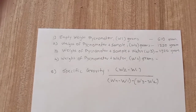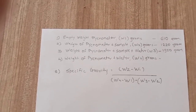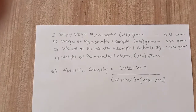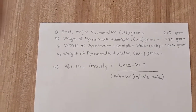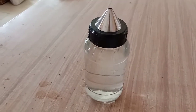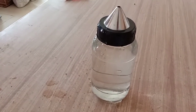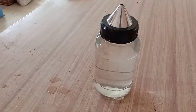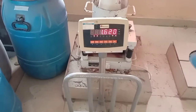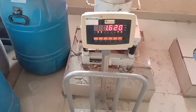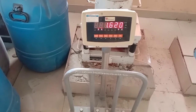Now I am going to remove that sample and take the weight of the pycnometer with only distilled water. I have removed the sample from the pycnometer, and now I am taking the weight of this pycnometer plus distilled water. The weight comes out to be 1 kg 620 grams.